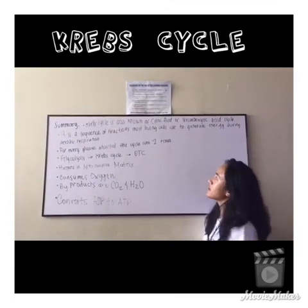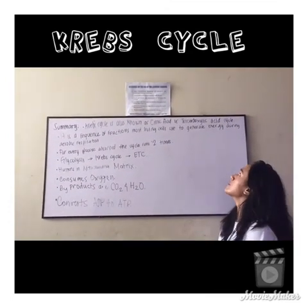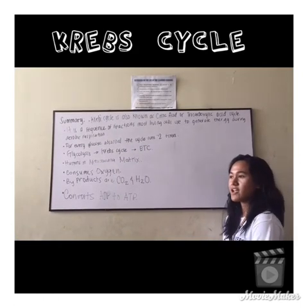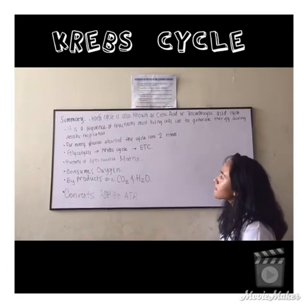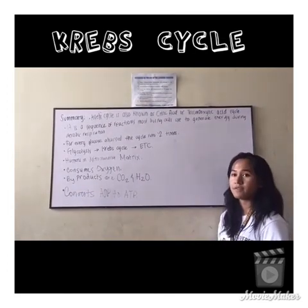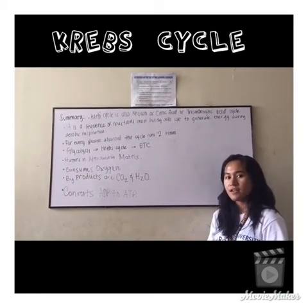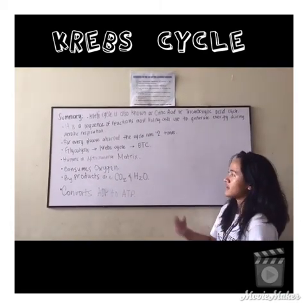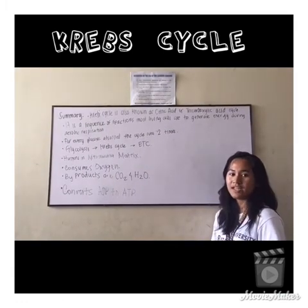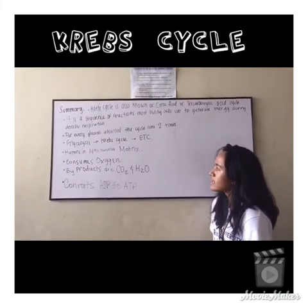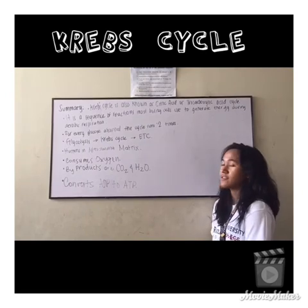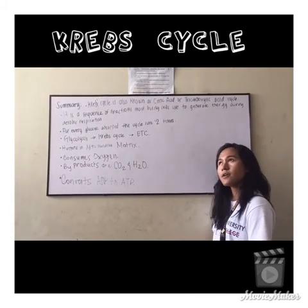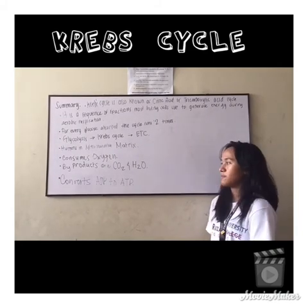Let's recap: the Krebs cycle is also known as the citric acid cycle or tricarboxylic acid cycle. It is a sequence of reactions that most living cells use to generate energy during aerobic cellular respiration. For every glucose absorbed, the cycle runs two times because in glycolysis the glucose is broken down into two pyruvates. The Krebs cycle takes place after glycolysis and before the electron transfer chain. It happens in the mitochondrial matrix, consumes oxygen, and its by-products are carbon dioxide and water, and it converts ADP to ATP.